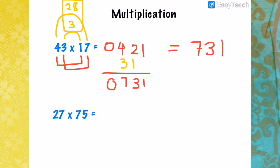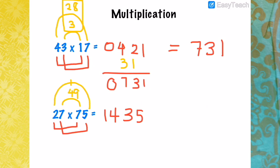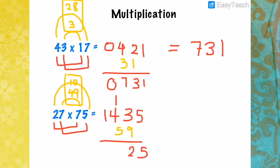Another example: 27 times 75. Multiply the tens place: 2 times 7 is 14. Multiply the ones place: 7 times 5 is 35. Multiply the inner value: 7 times 7 is 49. Multiply the outer value: 2 times 5 is 10. Add inner and outer: 49 plus 10 is 59. Then add across: 5 plus 3 is 8 — wait, 9 plus 3 is 12, carry 1. 4 plus 1 plus 5 is 10, carry 1. 1 plus 1 is 2. Therefore 27 times 75 is 2025.